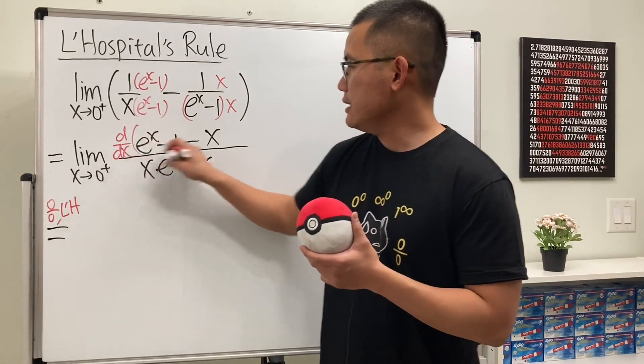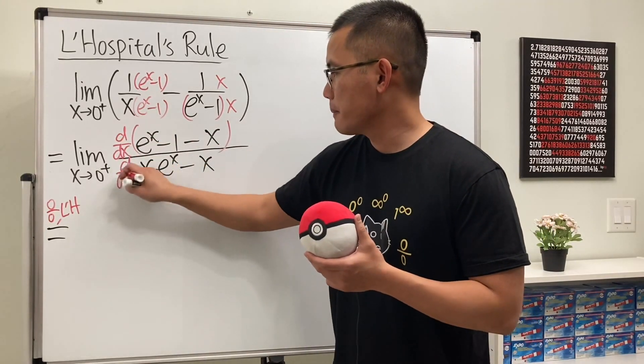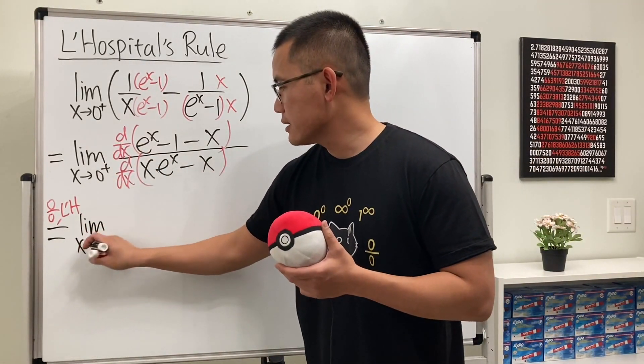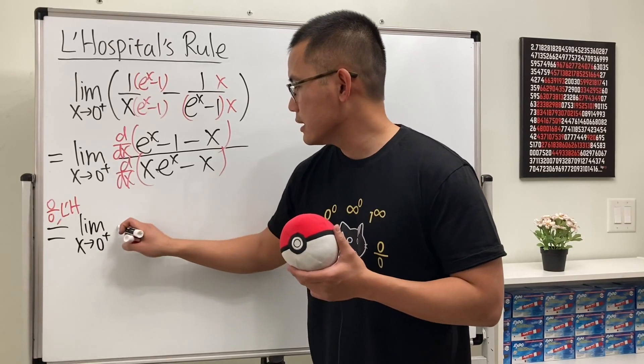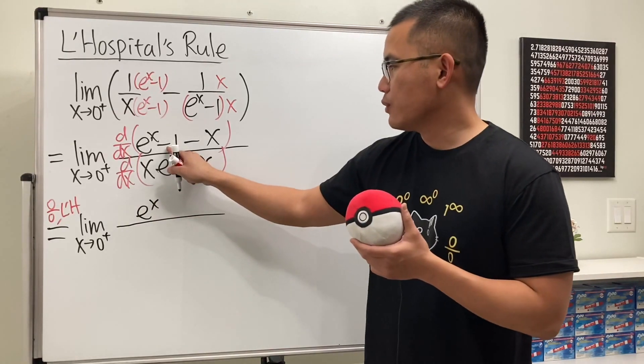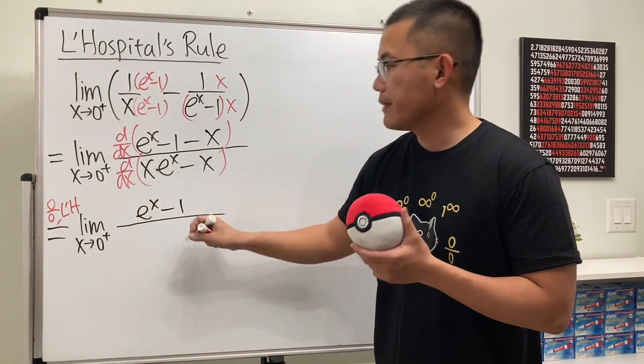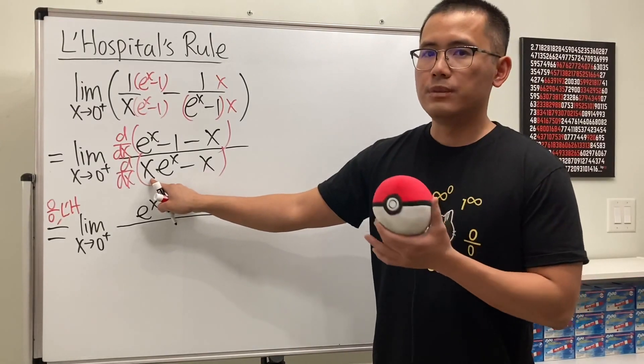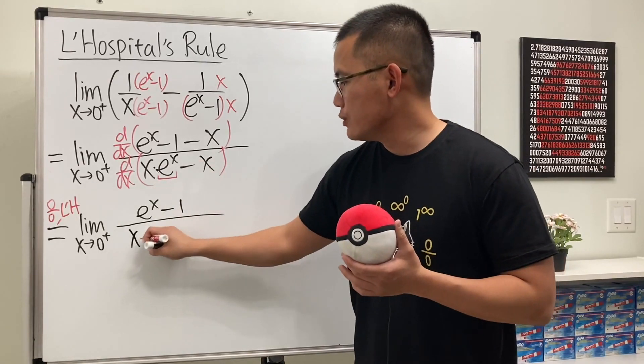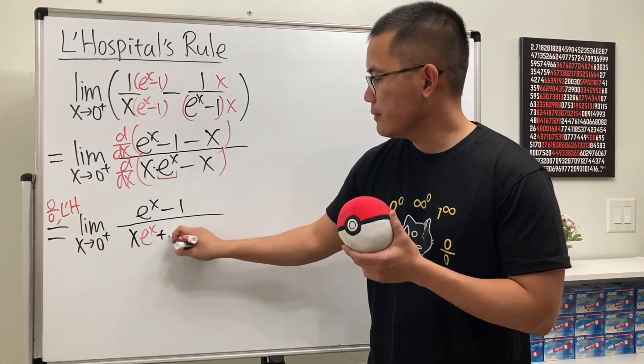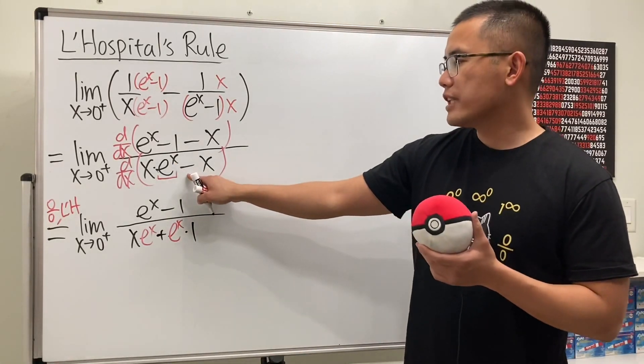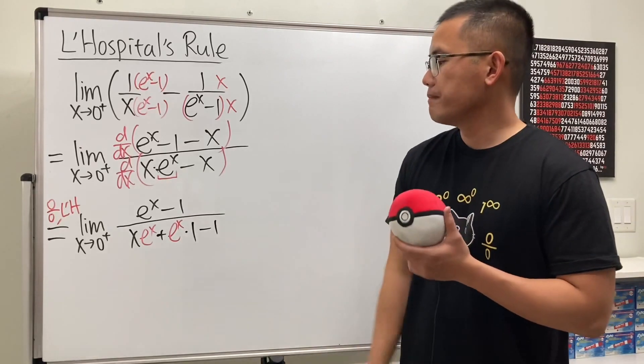Let's go ahead and put the d dx. This is going to give us the limit as x approaching 0 plus. The derivative of e to the x is just e to the x. The derivative of negative 1 is just 0. The derivative of minus x is minus 1. This right here, we need to use the product rule. Keep the first function, multiply by the derivative of the second, which is e to the x. Add the second function and multiply by the derivative of the first. And differentiate minus x, we get minus 1.